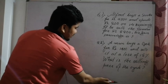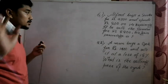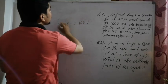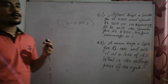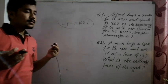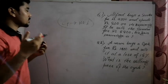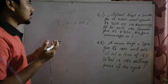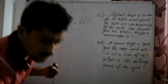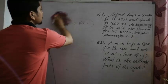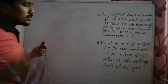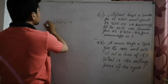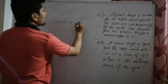The most important concept is that the cost price is always treated as 100%. Whatever value you buy at, that is your 100%. If you buy at Rs. 35, that is 100%. If you buy at Rs. 100, that is also 100%. We always treat cost price as the 100% base.